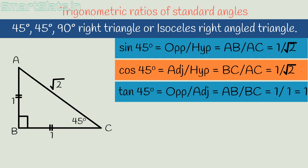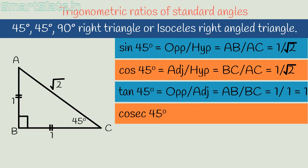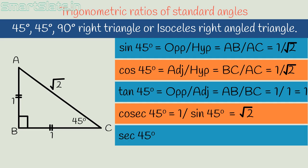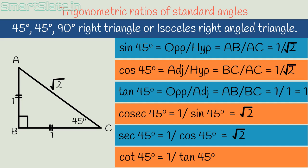We now have sin 45°, cos 45°, and tan 45°. Finding the remaining ratios is easy. Cosec 45° is the reciprocal of sin 45°, so it equals √2. Sec 45° is the reciprocal of cos 45°, so it is also √2. Cot 45° is the reciprocal of tan 45°; the reciprocal of 1 is 1, so cot 45° = 1. Have a look at all the values.